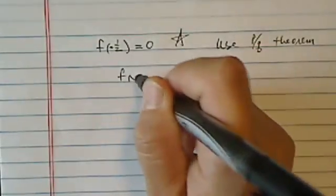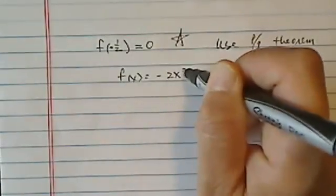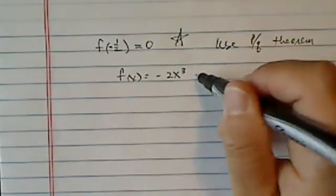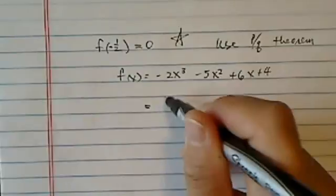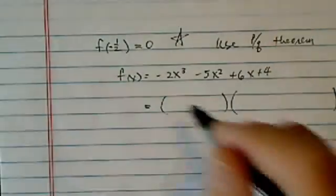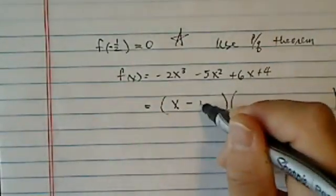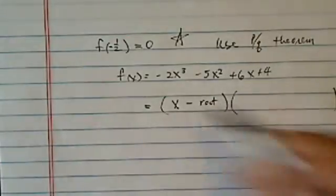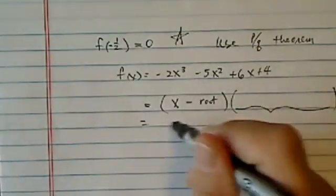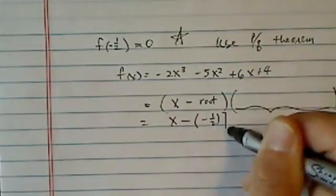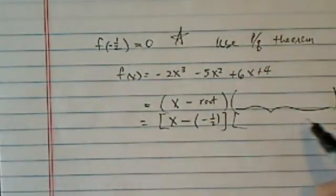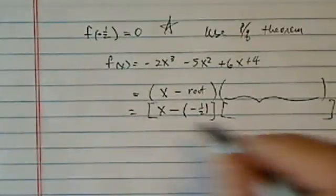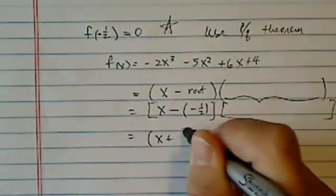This is a big deal because now my old polynomial of minus 2x cubed minus 5x squared plus 6x plus 4 all of a sudden can be rewritten as x minus this root, so times something else. So in our case, it's x minus minus half times something else, which we can use synthetic division to figure out in part 3. It's equal to x plus half.